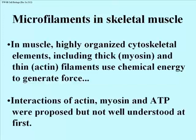Muscle is an example of highly organized cytoskeletal elements, which include not only actin, but the very much thicker filaments called myosin. Between the two of them — thick and thin filaments, or myosin and actin — these use the chemical energy of ATP hydrolysis to generate force. For a muscle to get shorter, that contraction is able to generate force to lift the weight. So we're going to look at the interactions of actin and myosin filaments.